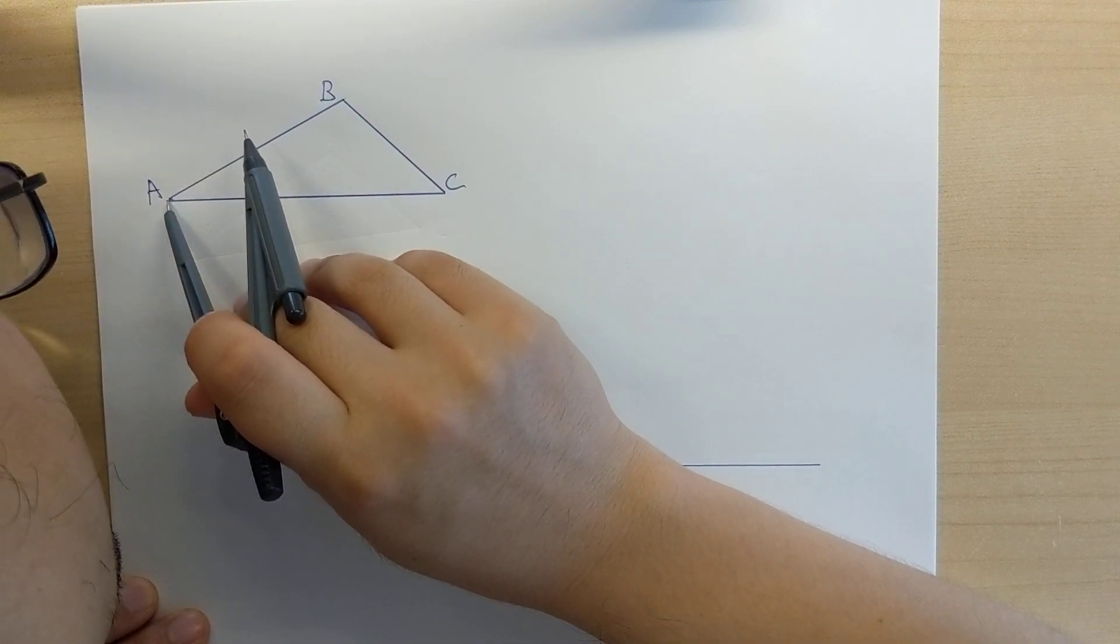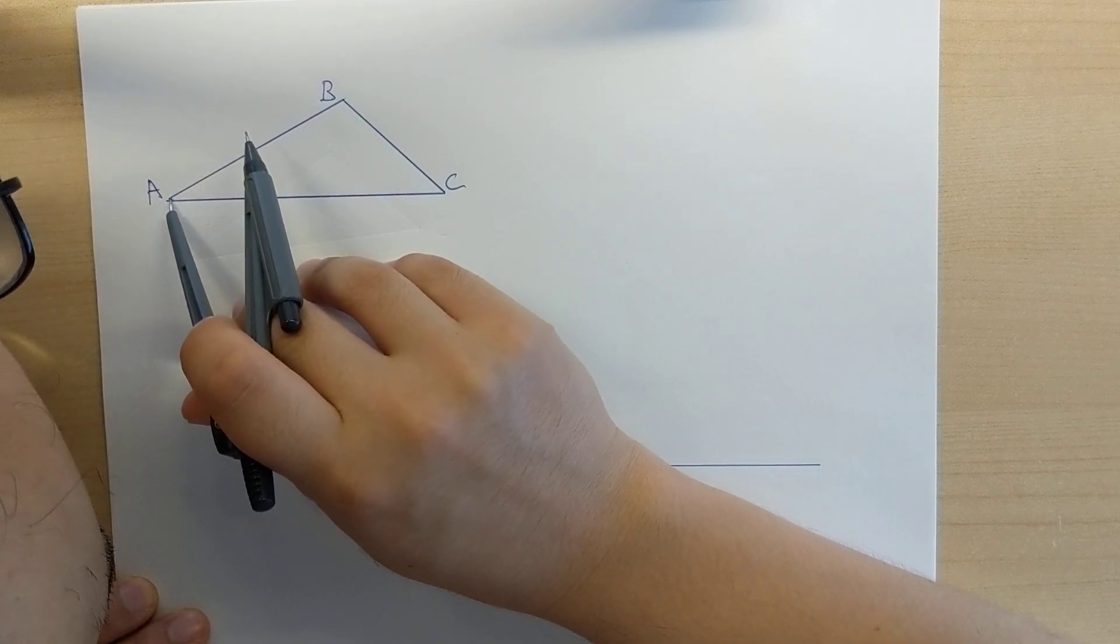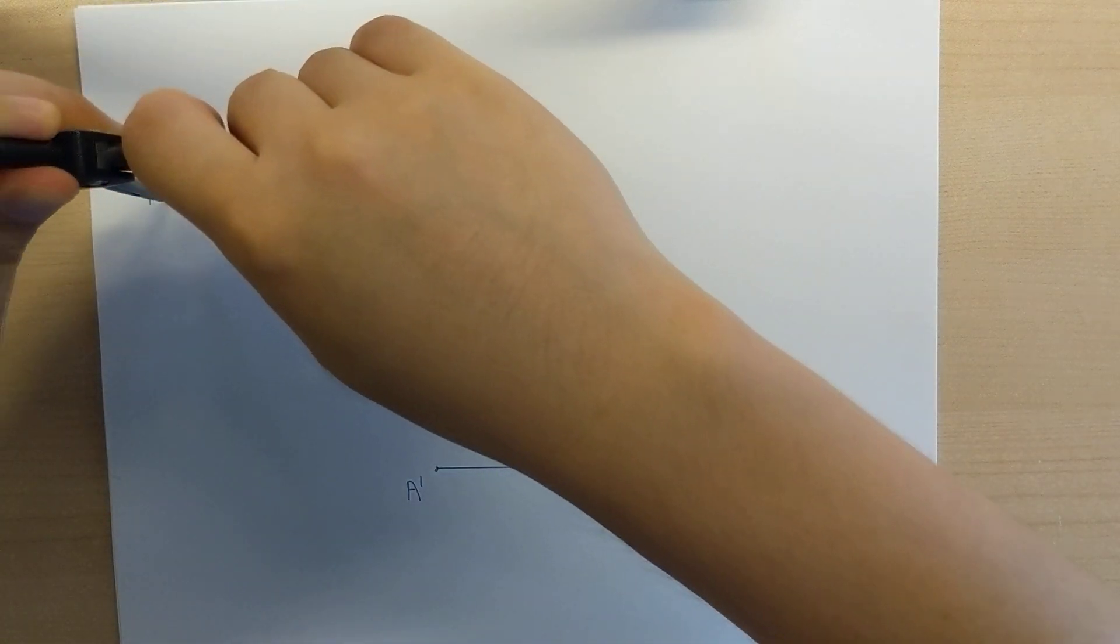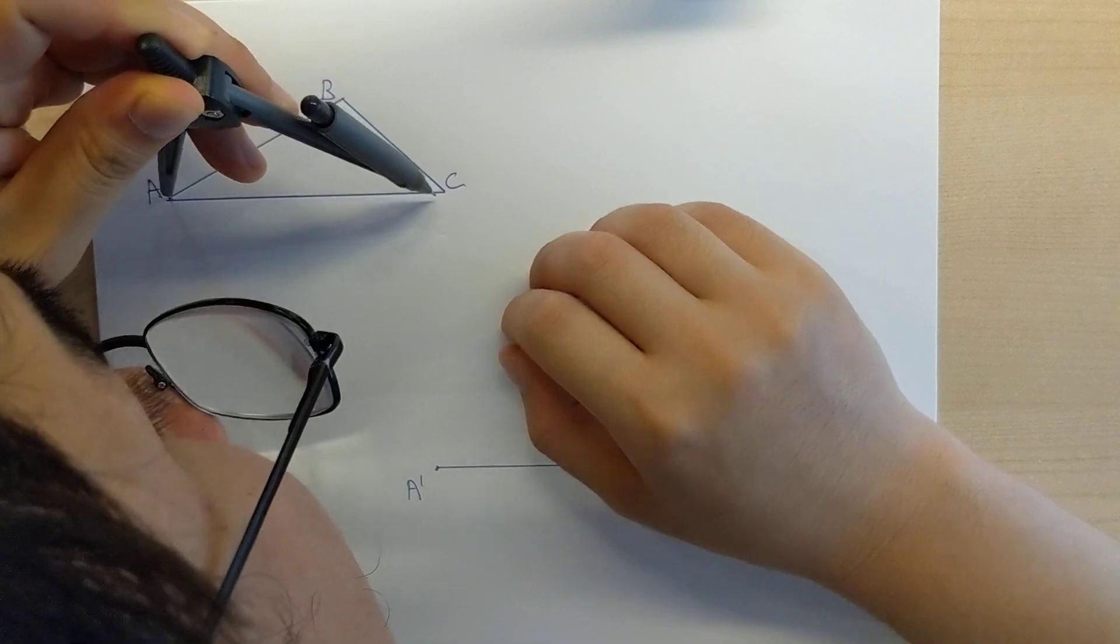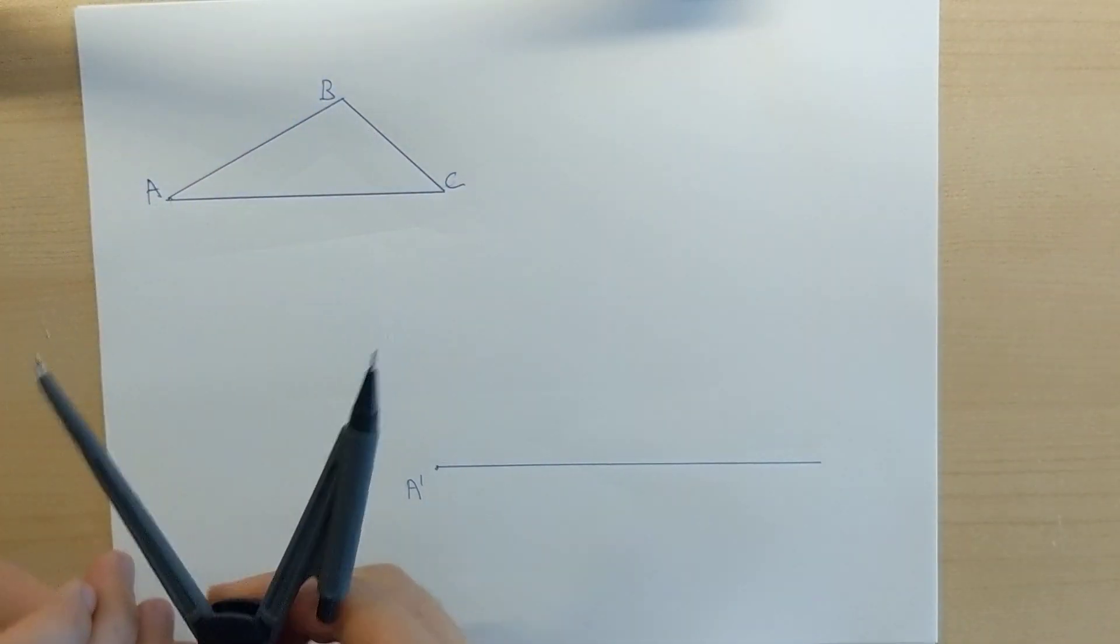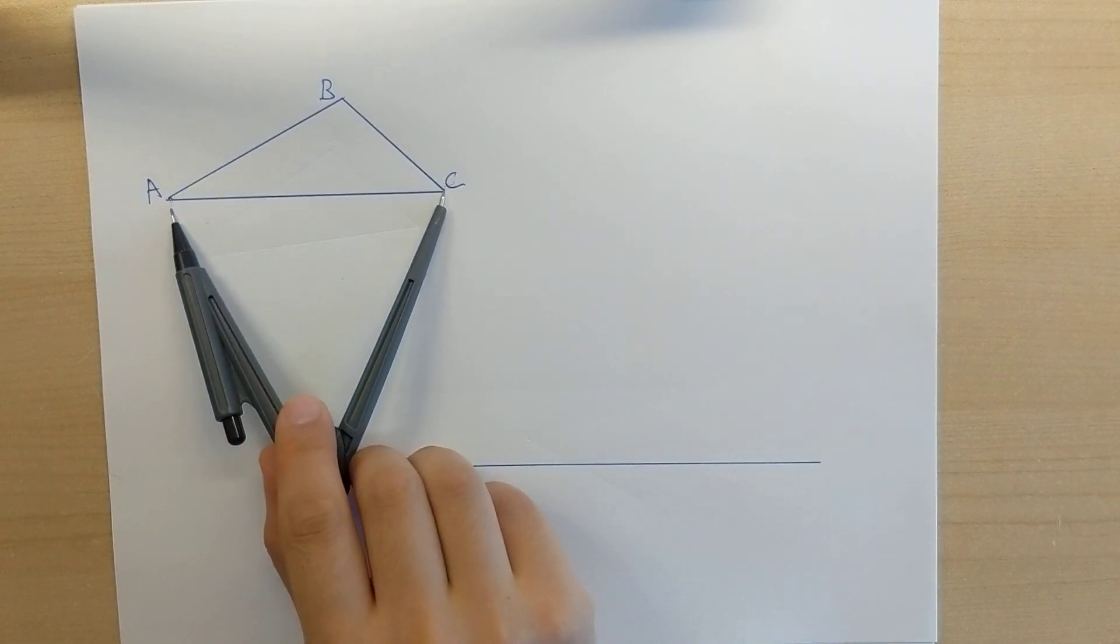So, I place my pin on A, and I open up the compass setting to C. So, there you have it, this length right here is the length of AC.